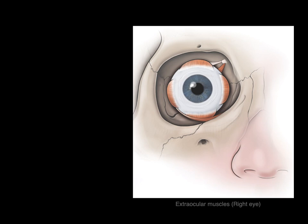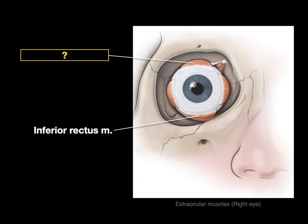Here are the extraocular muscles of the eye on the right side. This muscle is called the inferior rectus muscle — the straight muscle on the bottom of the eye. What do we call this one? We call it the superior rectus muscle.